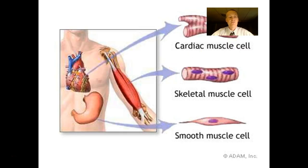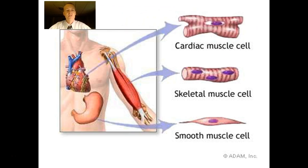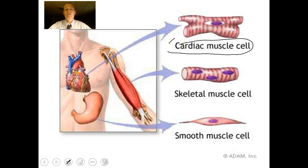If you remember back when we did the body organization, we talked about how there are different kinds of tissues: epithelial tissue, connective tissue, nervous tissue, and then there's muscular tissue. There is cardiac muscle tissue and that's the tissue found in and running your heart.